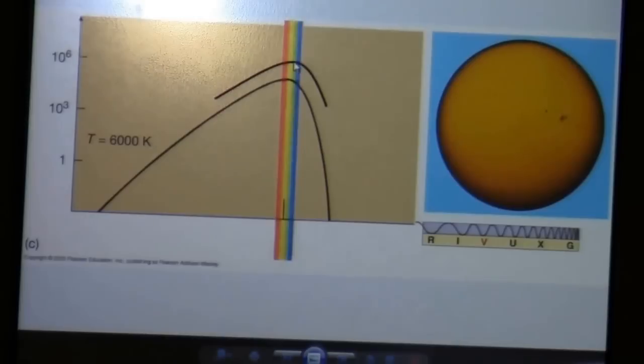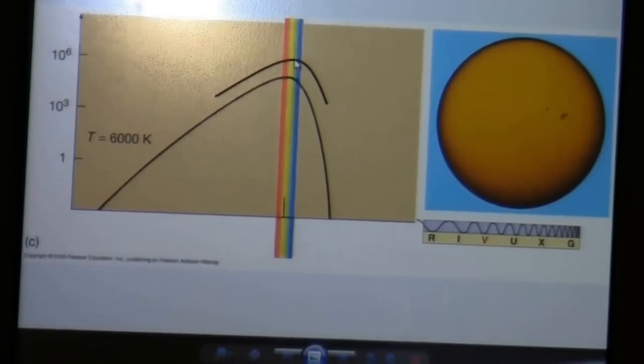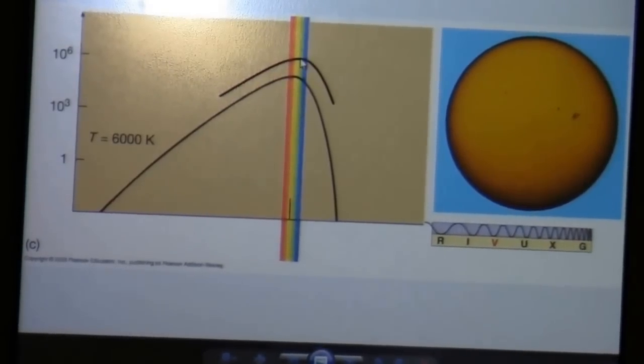But if you're peaking at the temperature that puts it right on green, you have about the same amount of light at all wavelengths. So if you mix equal amounts of all the colors, in particular red, green, and blue, you get white, at least to the human eye.